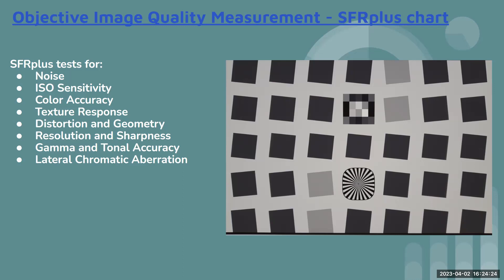The ISO 12233 chart is outdated and not recommended by industry standards — IMATEST no longer recommends using it. It is now recommended to use the SFR plus chart for better image quality measurement. Tests you can perform using the SFR plus chart include noise, ISO sensitivity, color accuracy, resolution texture, distortion through corner patches, sharpness, and gamma. A lot of testing can be performed on this one single chart.